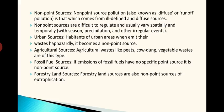The main non-point sources are urban sources — inhabitants of the urban area, when they emit waste hazardously, it becomes a non-point source. A lot of waste is expelled by everyone living in urban areas, and we cannot predict exactly from where it is coming. The next important non-point source is agricultural sources — agricultural waste like peats, cow dung, and vegetable waste are of this type. Cow dung has a lot of nitrogen content, so it is a major non-point source causing eutrophication.